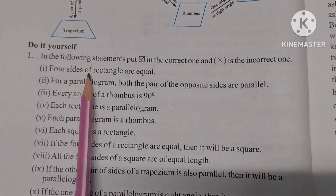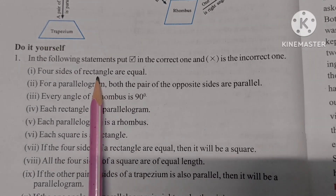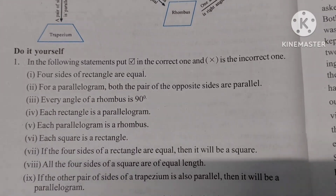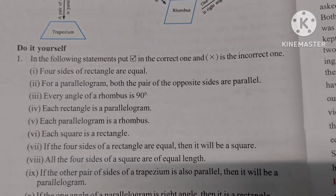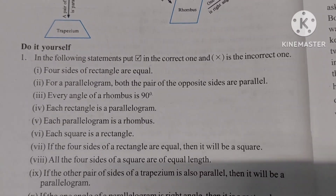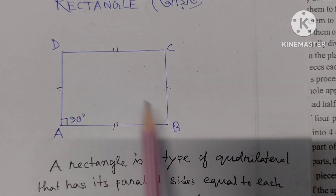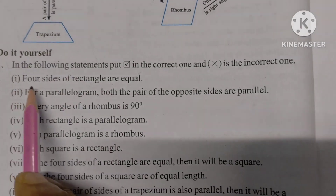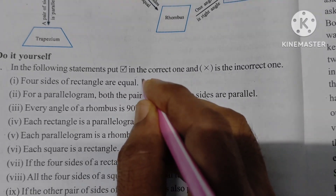Statement 1: The opposite sides of a rectangle are equal. Looking at this, we find that all 4 sides of a rectangle being equal is wrong or incorrect. So we put a cross — this statement is incorrect.